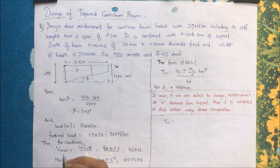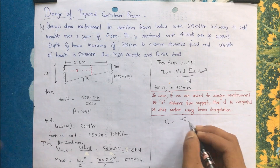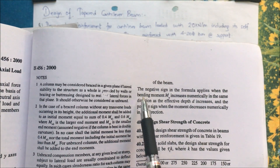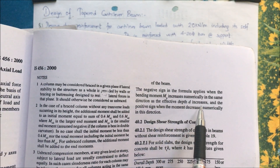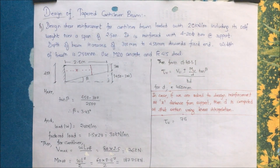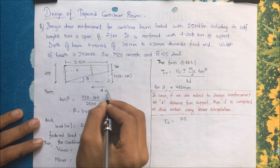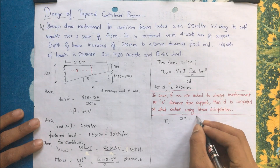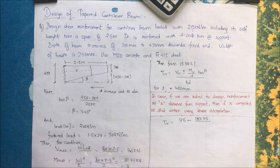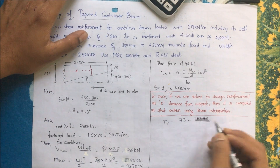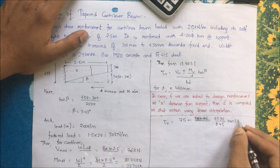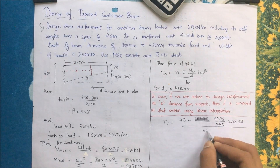Now substituting: tau_v = (V_u ± M_u·tan(β)) / (b·d). The negative sign applies when the bending moment and effective depth both increase in the same direction. Here, depth increases toward the fixed end and moment also increases toward the fixed end, so we use the negative sign. Substituting 75 kN, M_u = 93.75 kN·m, D = 0.45 m, tan(3.43°), B·D = 230×450, tau_v = 0.555 N/mm².